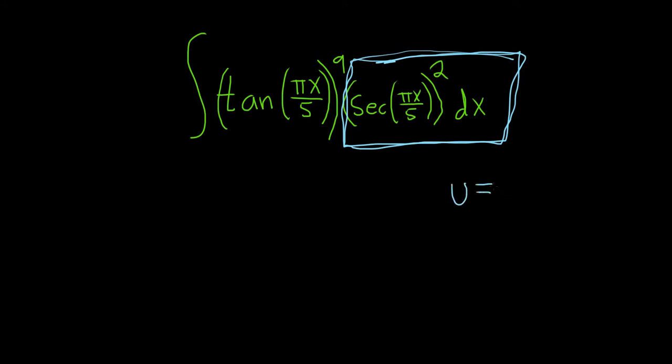u is the other one. So u is the tangent of pi x over 5. And now we'll take the derivative. So the derivative of tangent is secant squared, so du. So here it'll be secant squared of pi x over 5 times the derivative of the inside. So the inside function is really pi over 5 times x. So when you take that derivative, you're really taking the derivative of x, which is 1. The pi over 5 just hangs out. So this is dx.